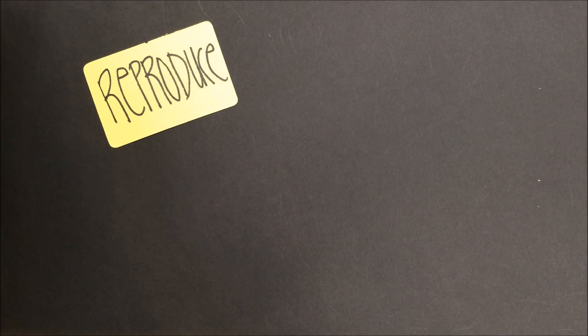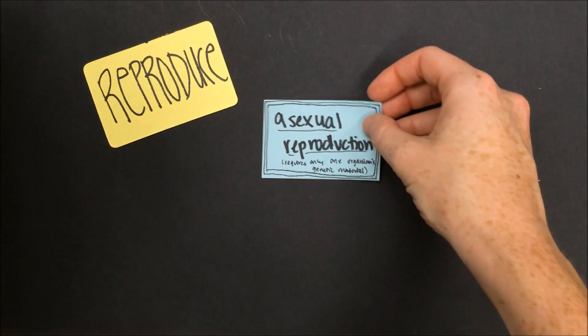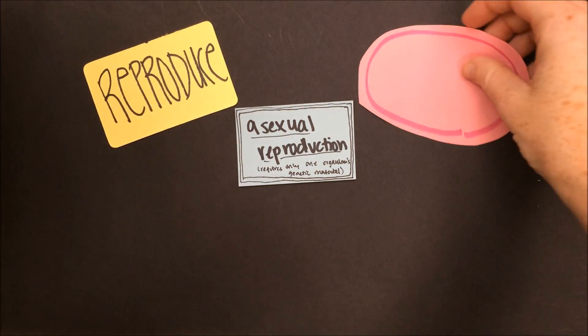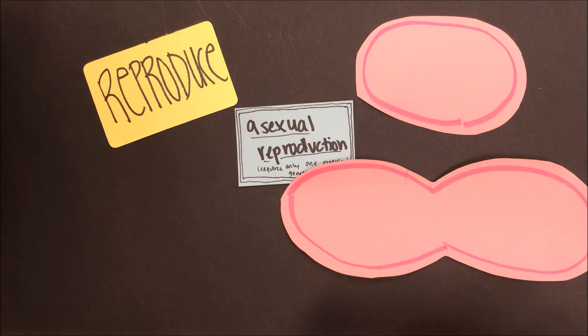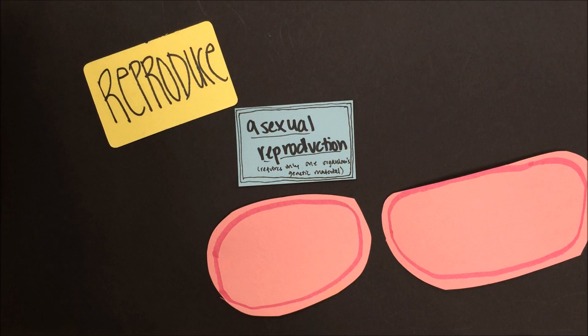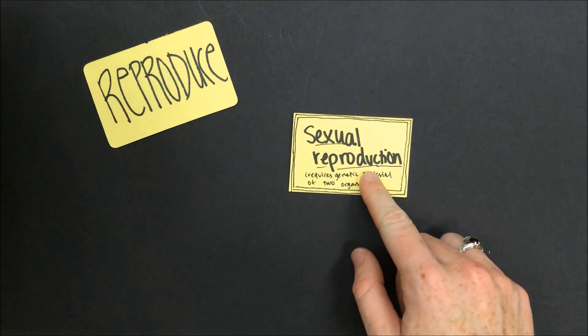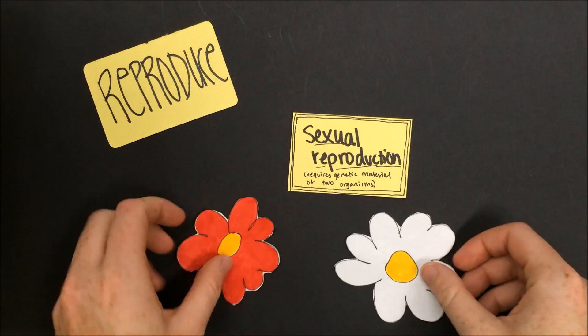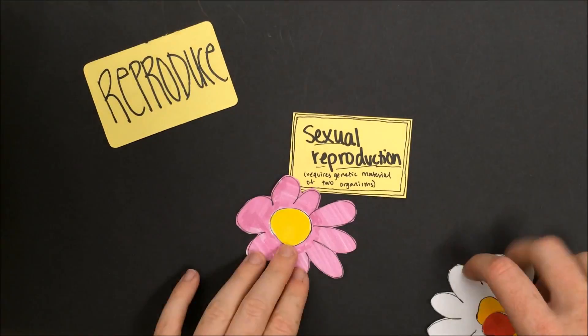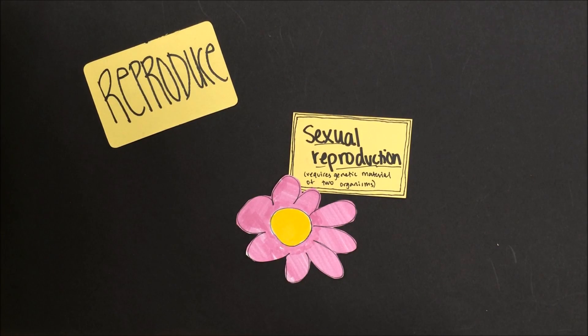All living things reproduce, which means they pass their traits on to the next generation. Some living things reproduce through a process called asexual reproduction. This simply means that an organism does not need a partner to pass on its traits to the next generation. Instead, a single organism can copy its genetic material and divide into two new organisms with the same DNA. This is kind of like cloning. Other organisms reproduce sexually, which means that genetic material from two parent organisms is combined to create a new organism in the offspring generation with a unique genetic code.